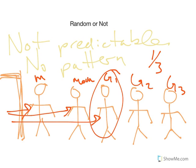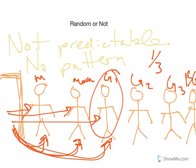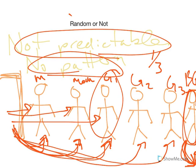Now let's imagine there's a bad guy trying to do bad things to an airplane, and he's watching this TSA screener go down the line. He watches her go: skip, skip, select. Skip, skip, select. Skip, skip, select. And he's right there in line — skip, skip — and he can see what's coming. Can the bad guy beat this system? Sure. All he does is let the person behind him go in front, and then he can go do bad guy things on the airplane. So this pattern allows you to predict the outcome, which means it's not random.